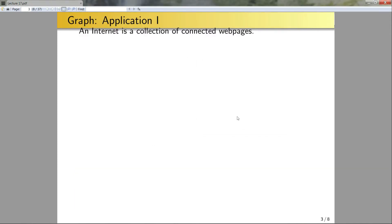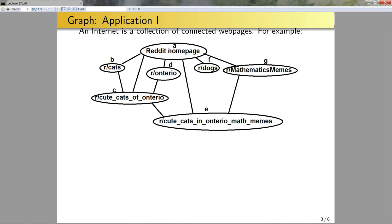So for our first application, let's notice the internet is a collection of web pages. For instance, this could be my internet. Here I have a Reddit homepage. From the homepage, I could access r/cats, r/Ontario, r/cute_cats_of_Ontario, r/dogs, or r/mathematicsmemes. And from here, from r/cats, I could access cute cats of Ontario. Well, since this is kind of a small enough of the internet, I could know where everything is.